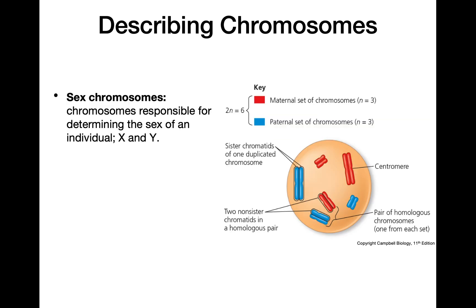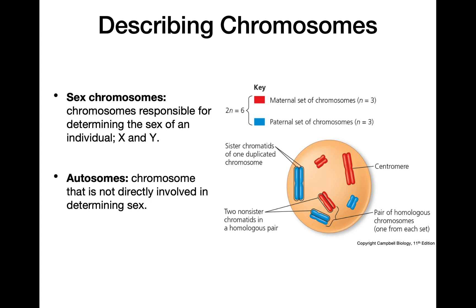Sex chromosomes are the ones responsible for determining the sex of an individual — those are our X and Y chromosomes. Autosomes are basically everything that's not a sex chromosome.